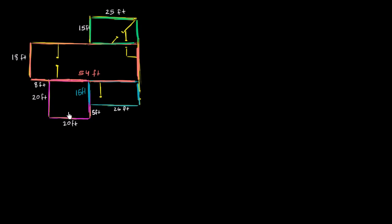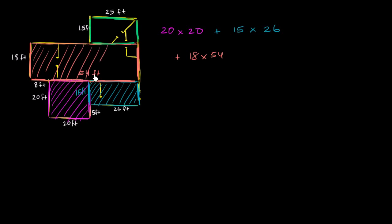And so now we can calculate the areas of the different rectangles. So the total area is going to be the 20 feet by the 20 feet. So let's just multiply them. So it's going to be 20 times 20. That's this area right over here, plus 15 times 26. That's this area right over there, plus 18 times 54, which is this area right over there. And then finally, plus 15 times 25, which is this area right over here.